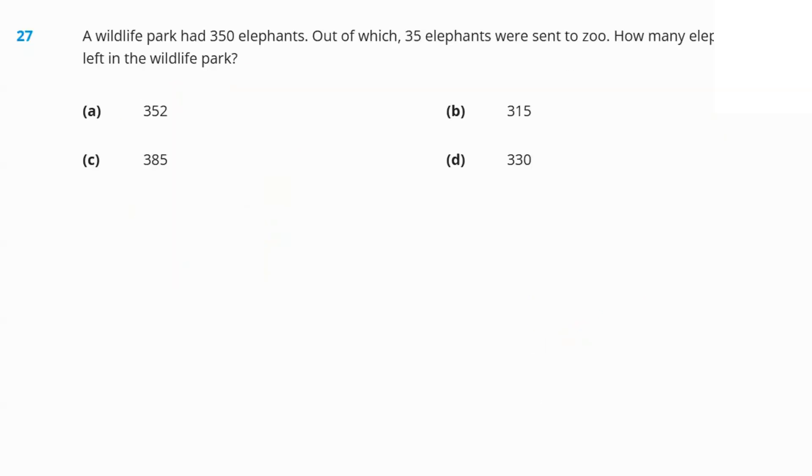The next question. A wildlife park had 350 elephants. Out of which 35 were sent to the zoo. How many elephants were left? 350 minus 35. If you subtract, that would be 315. Option B.